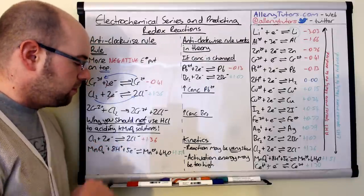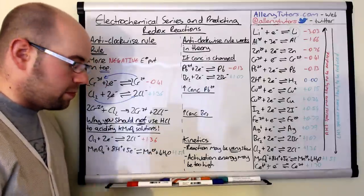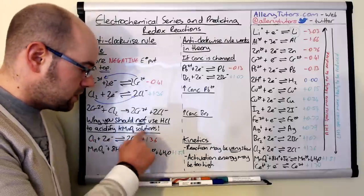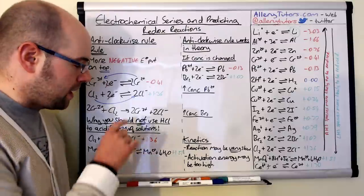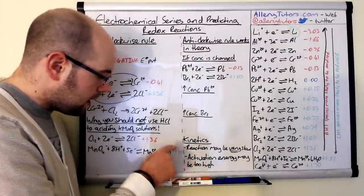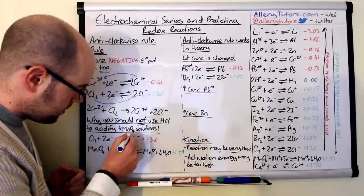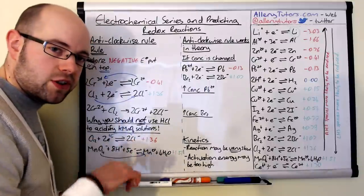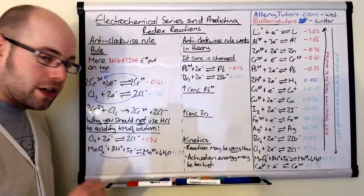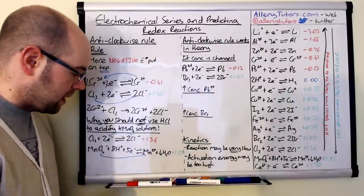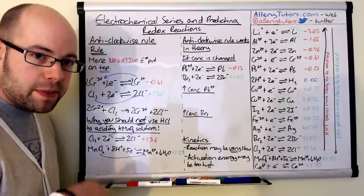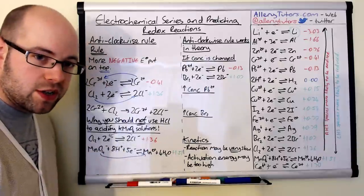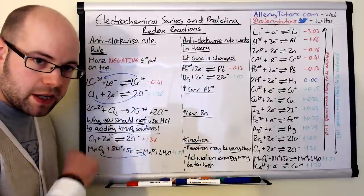We put the most negative E0 on top — both values are positive, but the chloride one is the most negative compared to the manganate one. Now we draw our anti-clockwise arrows: starting from the right hand side, an arrow going along there and an arrow going the other way, showing the rotation of our equations. The electrons aren't balanced — we have five electrons in the manganate row and two in the chlorine row — so we need to multiply the top row by five and the bottom row by two to get ten electrons on each side.